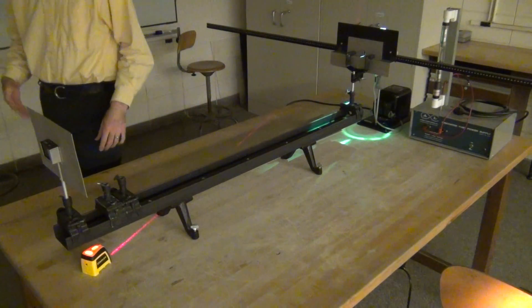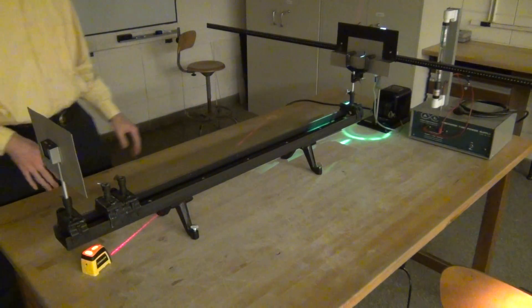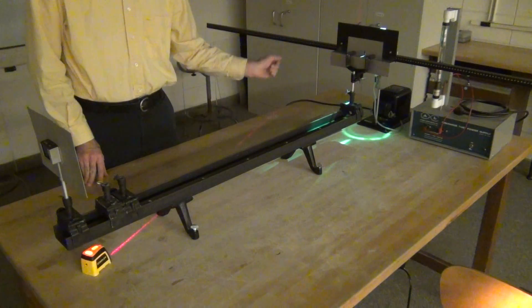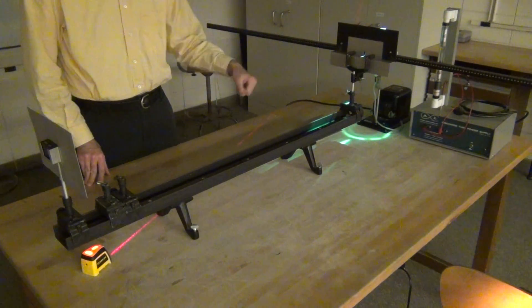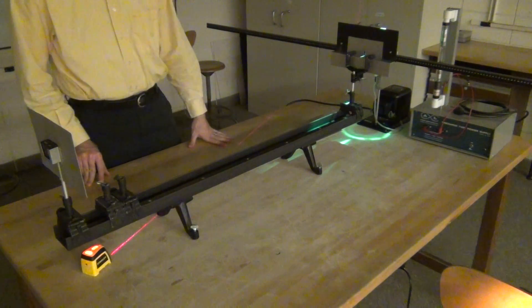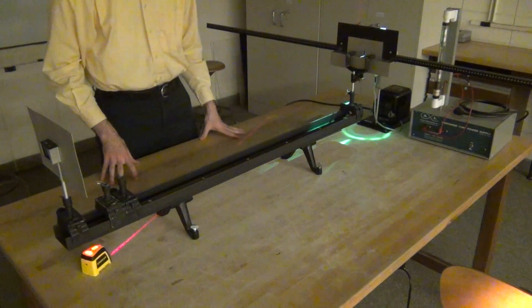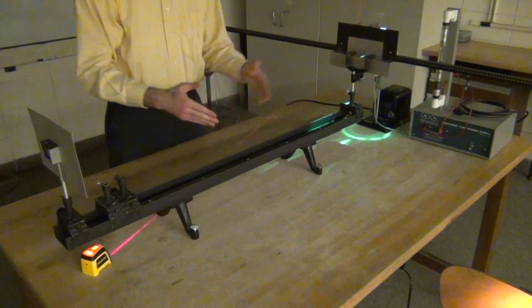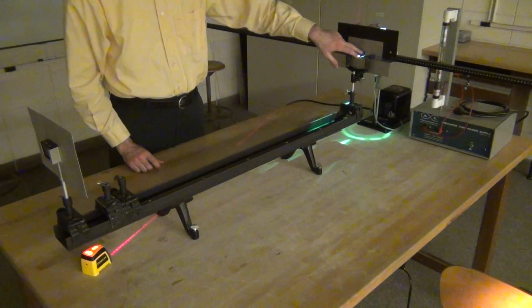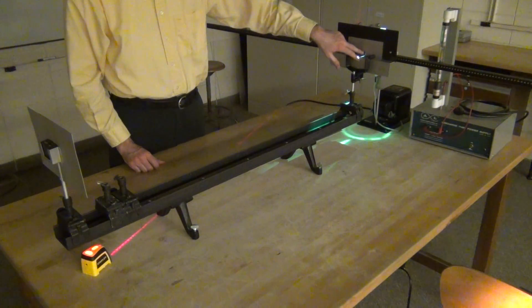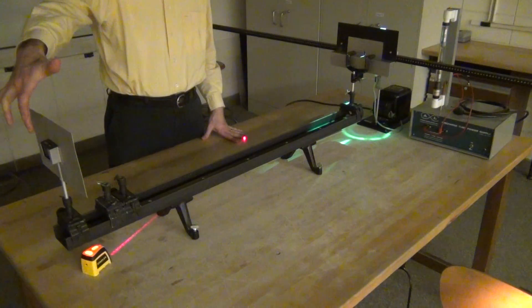Every person in the lab group should measure the four positions on both sides, so eight measurements total, and they should be for the same color, the same distance on both sides. Then you can calculate the distance between this slit and the diffraction grating.